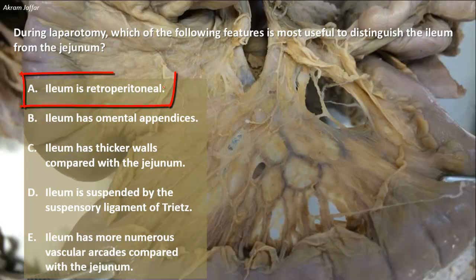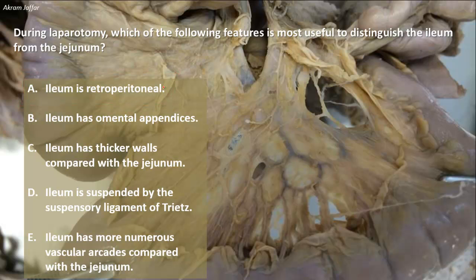The first option is that the ileum is retroperitoneal. Of course, the ileum together with the jejunum, both of them are intraperitoneal. In the small intestine, it is only the duodenum that is retroperitoneal. To be specific, the first inch of the first part of the duodenum and the last segment of the last part of the duodenum are in fact intraperitoneal, but most of the duodenum — the C-shape of the duodenum — is retroperitoneal.